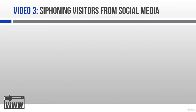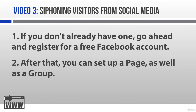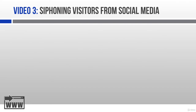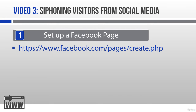First things first, you'll need to register for a free Facebook account if you don't already have one. Then you can set up a Facebook page as well as a group, and we'll go ahead and talk about each one of these separately. The first way to reach your audience is to set up a Facebook page for your business. Setting up a Facebook page is pretty painless — just go to the URL shown on the screen here and follow the prompts.